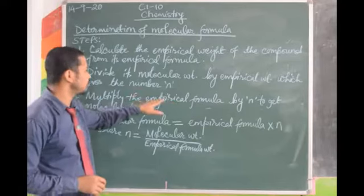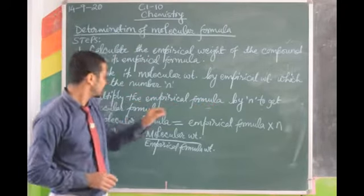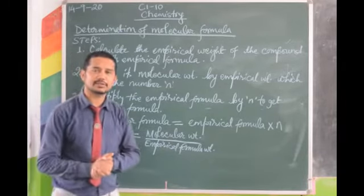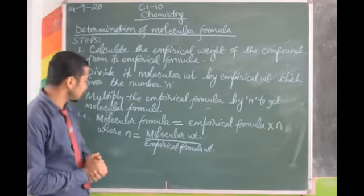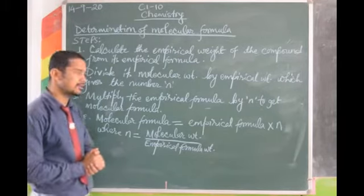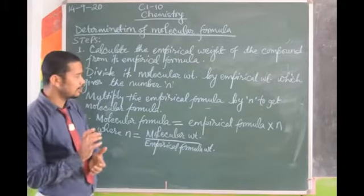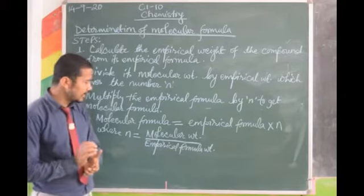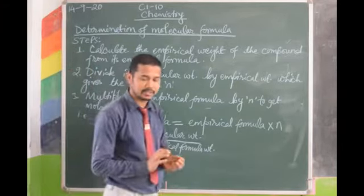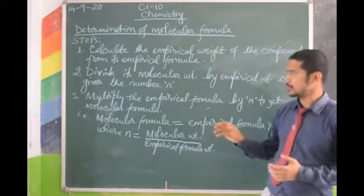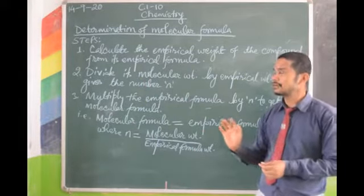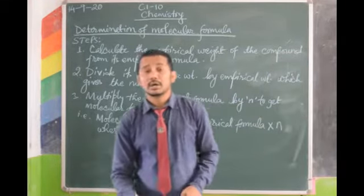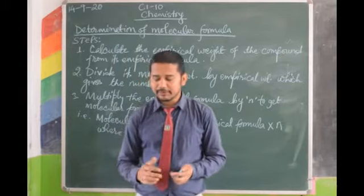Then multiply the empirical formula by N to get the molecular formula. That is: molecular formula = empirical formula × N, where N = molecular weight ÷ empirical formula weight. Now we will do some examples to understand this concept very clearly.